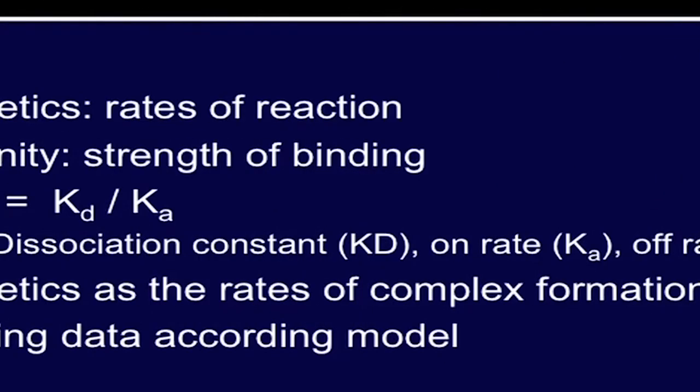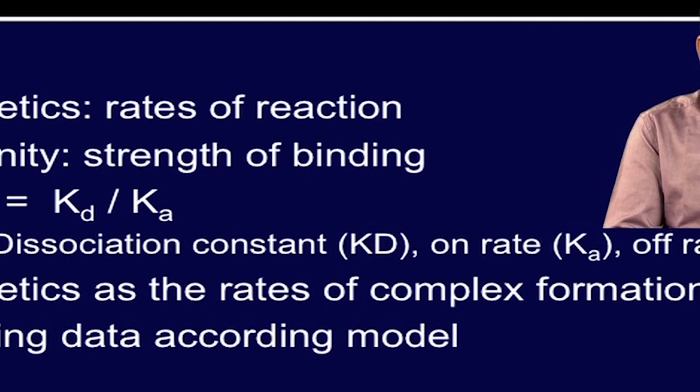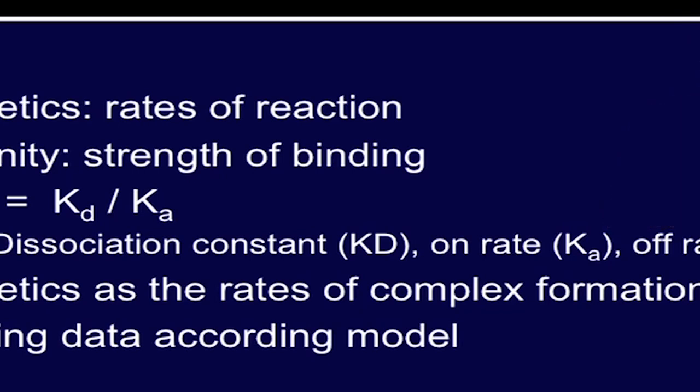By using SPR imaging, the kinetics and affinity can be determined. Kinetics represents the rate of reaction, whereas affinity shows the strength of binding. KD or dissociation constant is represented by kd divided by ka, where kd is the off-rate and ka is the on-rate. Therefore, kinetics, which represents the rate of biomolecular complex formation, can be evaluated by processing the raw data and further fitting the same into the appropriate models.